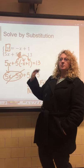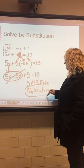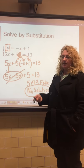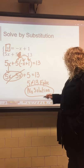This is a special case: is 5 equals 13 a true or false statement? Obviously it's false, therefore the answer is no solution. If we were to graph this, these two lines are parallel — they never cross, they never have a common point, which is why it results in no solution.